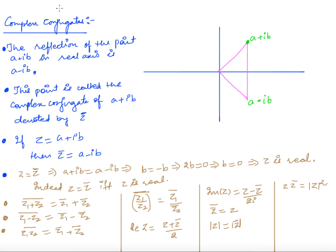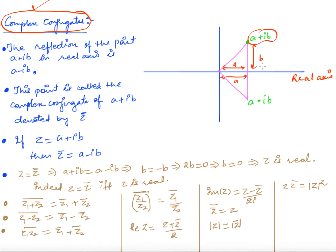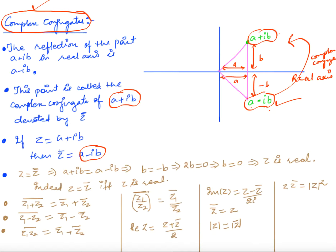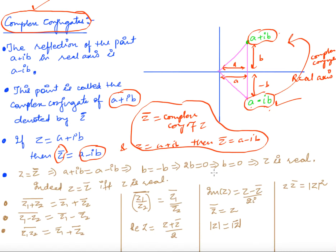Next we define the complex conjugate of a complex number. Given a plus iota b, take its reflection in the real axis. The real part a stays the same, while b becomes minus b. The resulting number a minus iota b is called the complex conjugate. We denote the conjugate of z as z-bar; so if z equals a plus iota b, then z-bar equals a minus iota b.